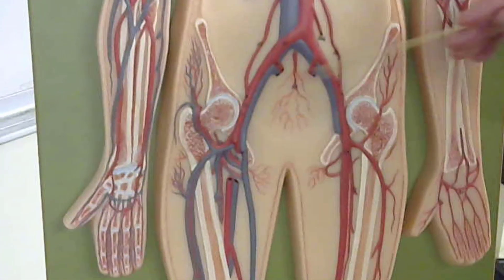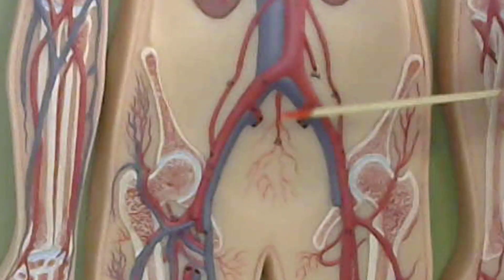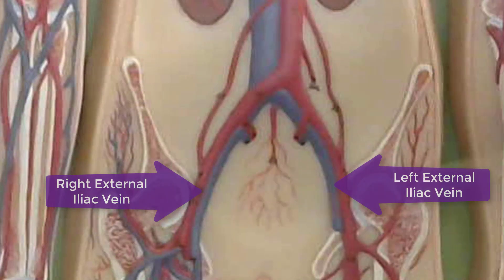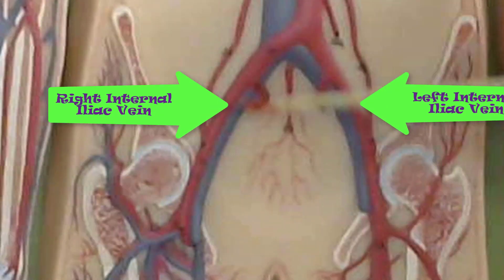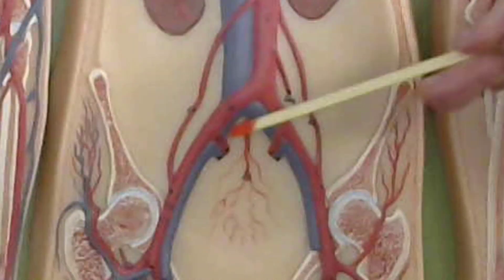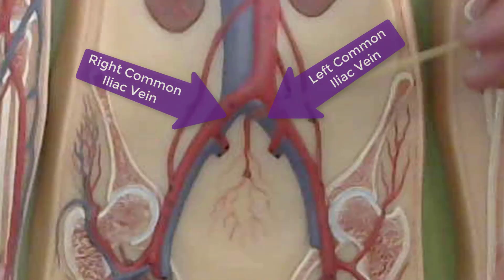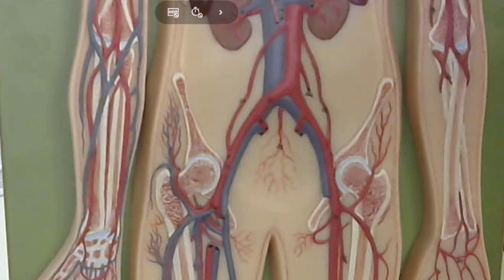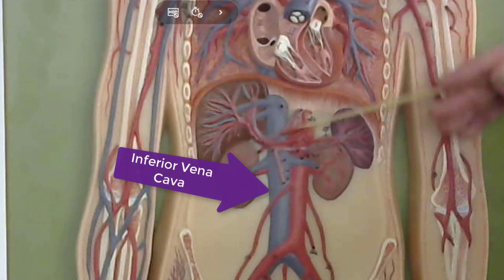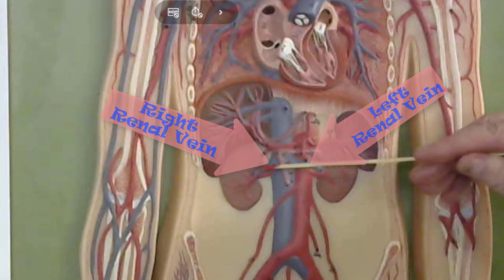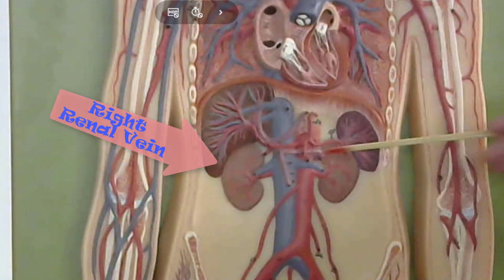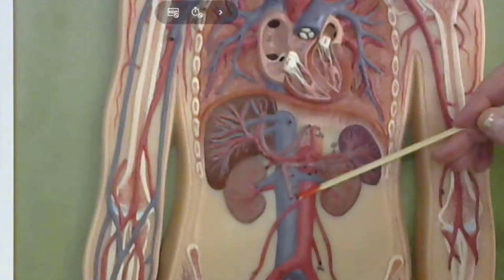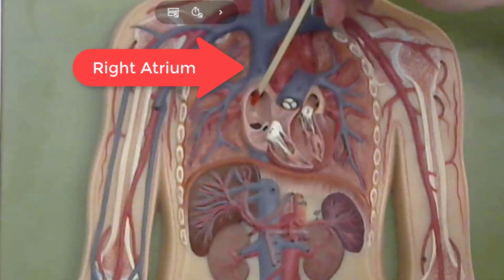Once the femoral vein enters into the abdominal pelvic cavity, it is going to form the external iliac vein. The external iliac veins are going to merge with the internal iliac veins to form the right and left common iliac veins. The right and left common iliac veins merge together to form the inferior vena cava. The renal veins also merge with the inferior vena cava to bring that deoxygenated blood from all portions of the lower body to the right atrium of the heart.